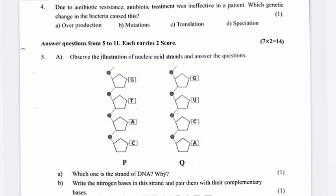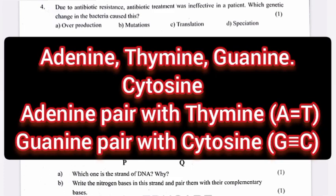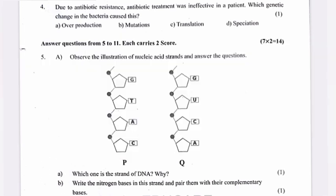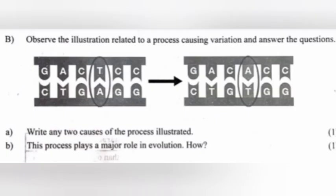Part b: Write the nitrogen bases in this strand and pair them with the complementary bases. Answer: Adenine, thymine, guanine, and cytosine. Adenine pairs with thymine; guanine pairs with cytosine.